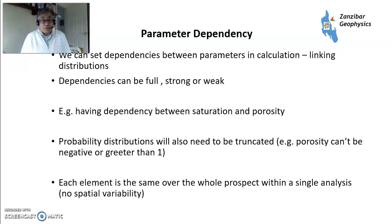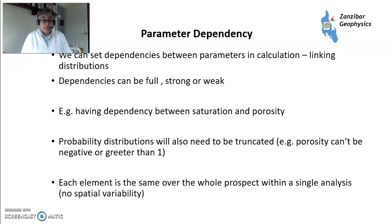How dependent are the parameters? You can set dependencies within GeoX and Crystal Ball between the different parameters. Dependencies can be full, strong, or weak. For example, there's a strong dependency between saturation and porosity — you have high water saturations and low hydrocarbon saturations in lower porosity rock. But things like net to gross and porosity may be completely independent — you may have relatively few but high-porosity sand stringers with low net to gross. Probability distributions can also be truncated — you can't have porosity that's negative or greater than one, similarly with saturations and net to grosses.